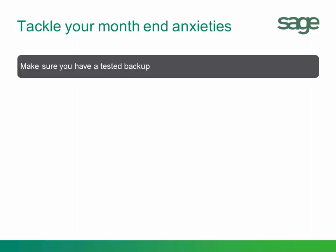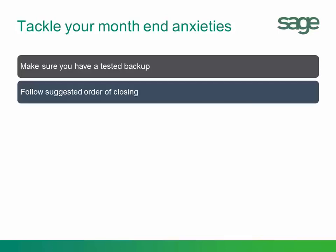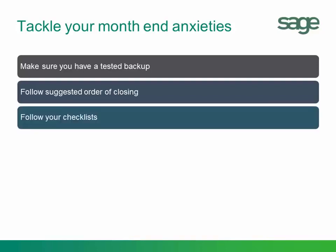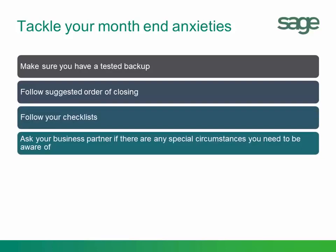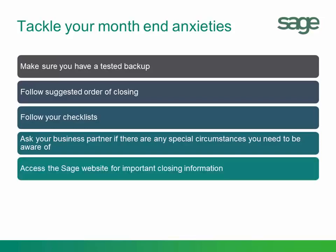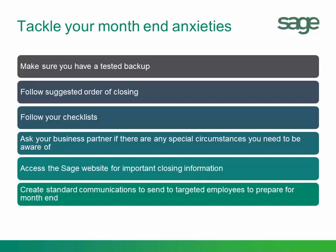You'll want to make sure you have a good, tested backup — that's the number one most critical thing we recommend. You need to follow the suggested order of closing so that things don't inadvertently happen that you may not want. You'll want to follow your checklist and ask your business partner if there are any special circumstances prior to closing. You'll want to access the Sage website for important closing information, especially at the end of the calendar year. It would also be helpful to create standard communications to send to targeted employees involved in closing the month, to prepare them on what they need to have available and ready.